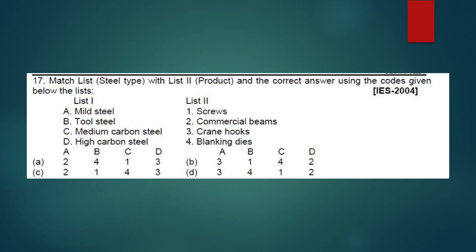List 1 and List 2 matching. If you don't know all four, you can solve this question. Mild steel should be crane hooks. Crane hooks are made up of mild steel material. So A with 3. And tool steel - they are blanking dies. Blanking dies material is tool steel.